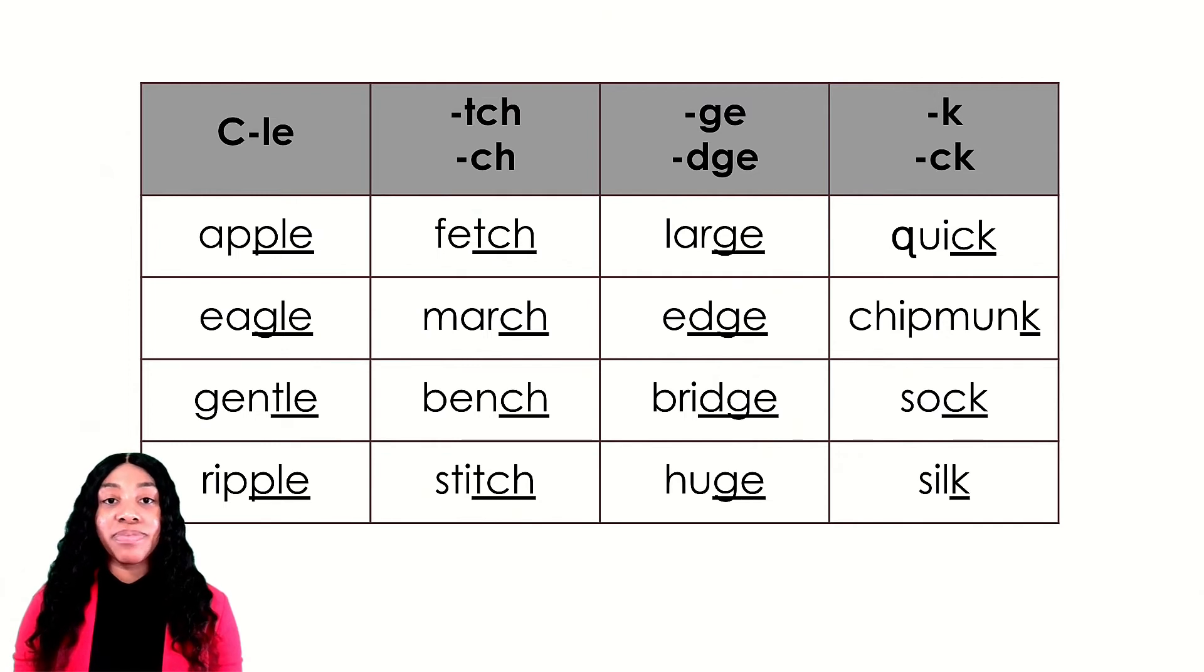You can see words that have a consonant L-E syllable: apple, eagle, gentle, ripple. Words with a ch sound at the end, spelled C-H or T-C-H: fetch, march, bench, stitch. Words with a j sound at the end, spelled D-G-E or G-E: large, edge, bridge, huge.